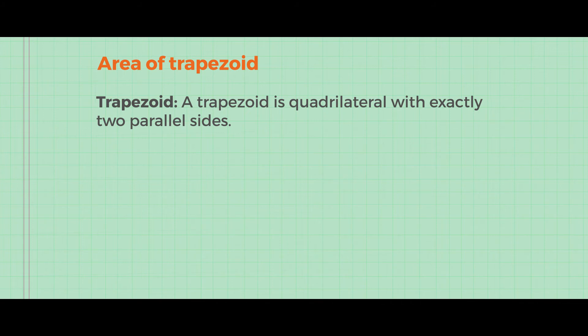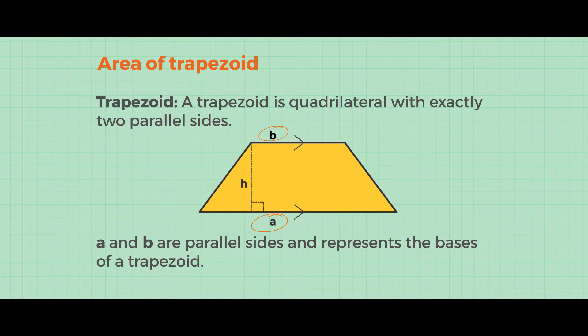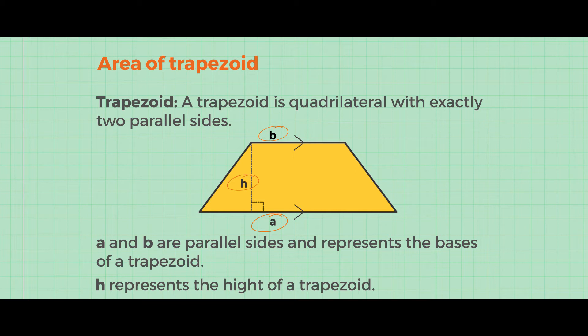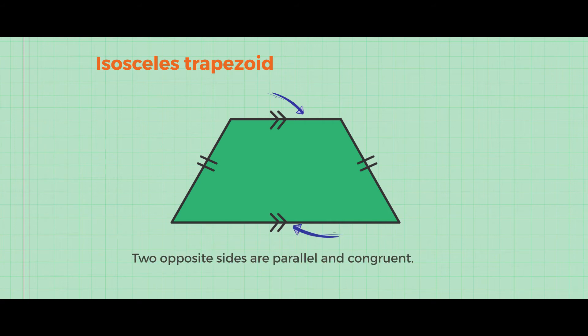Now let us look at the area of a trapezoid. A trapezoid is a quadrilateral with exactly two parallel sides, as you can see in the diagram. Here A and B are the parallel sides, representing the bases of the trapezoid. H represents the height of the trapezoid, which is perpendicular to the bases. I also have an example of an isosceles trapezoid here, where the two opposite sides are parallel and congruent.